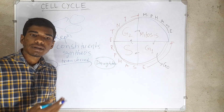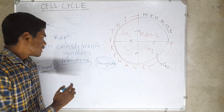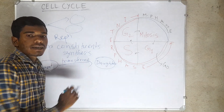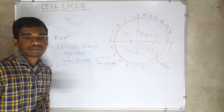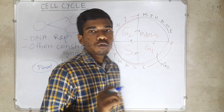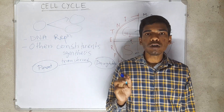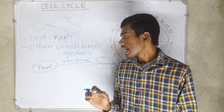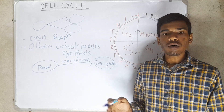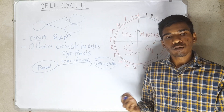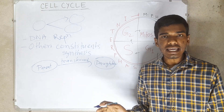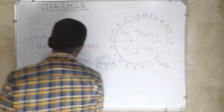The transfer of characters by replicated chromosomes is a complex series of events. The time taken to complete a full cell cycle is commonly 24 hours in most cases, but it may vary from organism to organism.